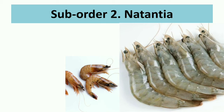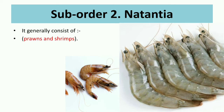The second sub-order is Natantia, which generally consists of prawns and shrimps, as you can see from the photos. So, in summary, Reptantia includes crabs and lobsters, while Natantia includes prawns and shrimps.